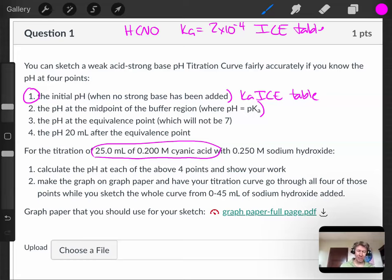And then the pH at the midpoint of the buffer region, where pH equals pKa, I'll find the pKa based on the Ka. And then at the equivalence point, you're going to, well,